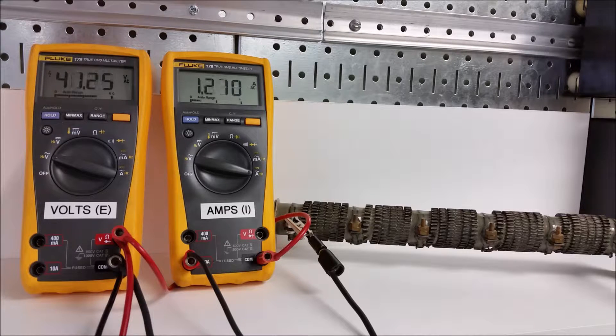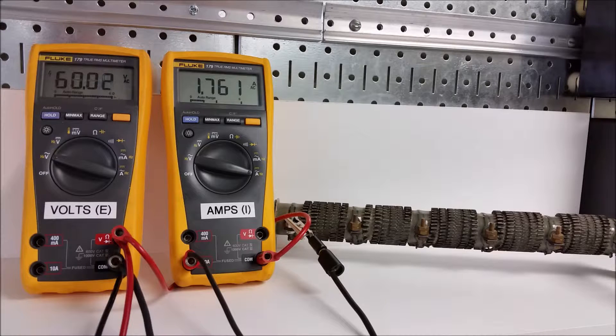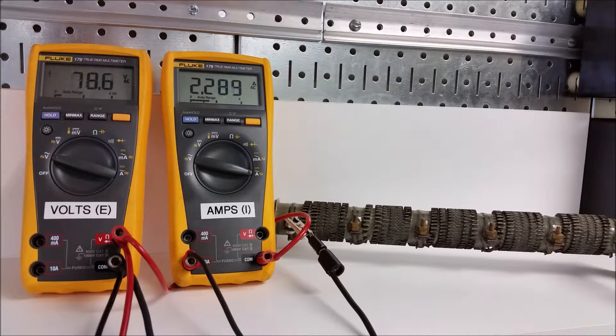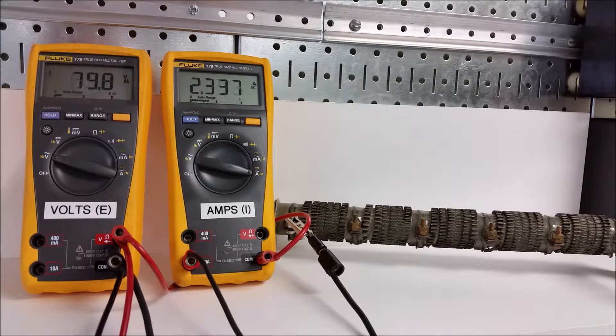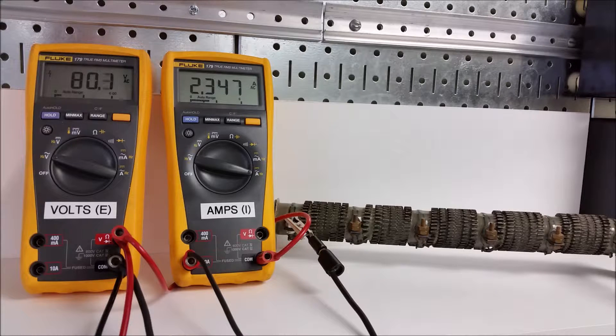Let's increase it again to 60 volts, and we get about 1.76 amps. And let's take one more measurement at 80 volts. And at 80 volts we get about 2.34 amps. So that gives us some data points, which we can plot on a graph to see whether or not we actually have a linear resistor.